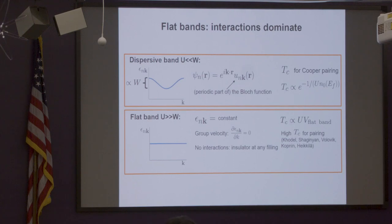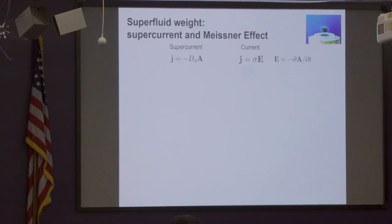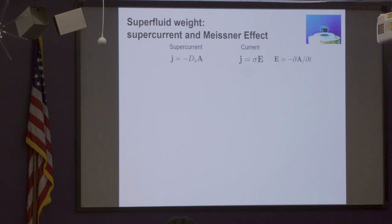This sounds very nice and promising, but there is one thing: this is only the absolute value of the order parameter — we are only talking about pairing here. And you know that pairing is not enough for superconductivity; you have to have the Meissner effect and supercurrent. Supercurrent is a different thing from a usual current — it involves the vector potential. This thing is the superfluid stiffness, or superfluid weight, and we have to evaluate that to say that we have a nice flat-band superconductor.